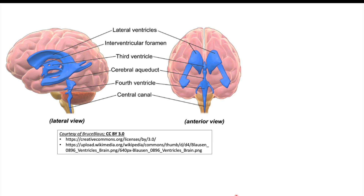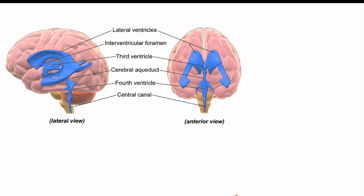To understand the proposed pathophysiological mechanisms, we first need to discuss brain anatomy — specifically the cerebrospinal fluid and the ventricles of the brain. The ventricles are spaces in the brain that contain cerebrospinal fluid. There are two lateral ventricles that connect to the third ventricle, which connects through the cerebral aqueduct to the fourth ventricle. The fourth ventricle connects to the subarachnoid space, the space between the arachnoid mater and pia mater, where cerebrospinal fluid flows.